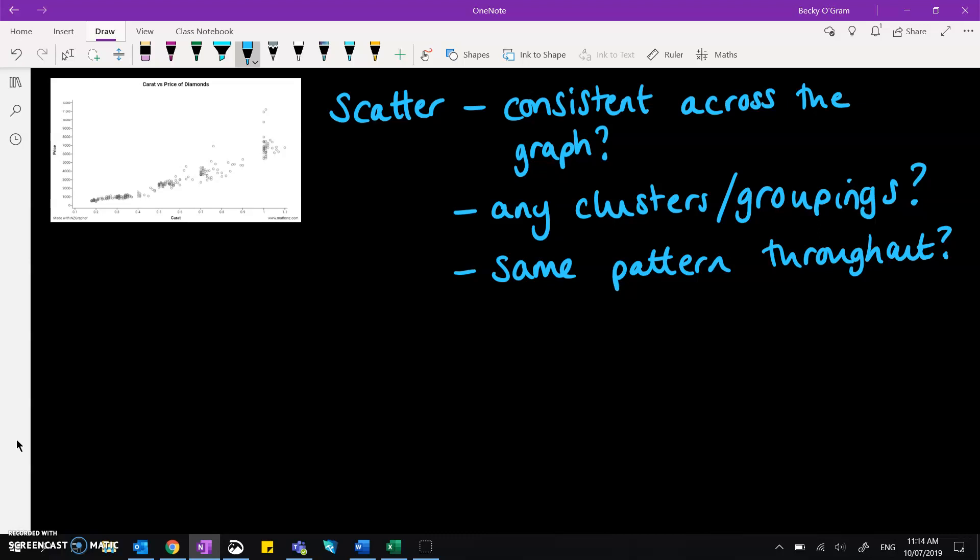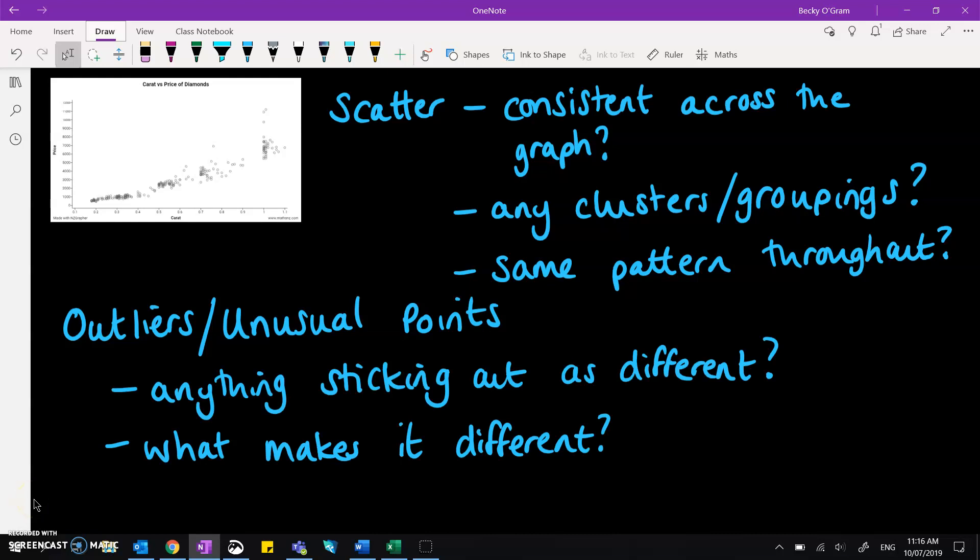And then finally, you'd consider if there are any outliers, although it'd be preferable to actually call those unusual points rather than outliers. It's a minor little difference, statistically speaking. Outliers follow an actual calculation to show that they're outliers, but it's better to write about them as being unusual points. So are there any bits of data that are looking like they are unusual from the rest of the trend? So is there anything that's looking particularly unusual, different from the rest of the data? And what is it that makes it different?